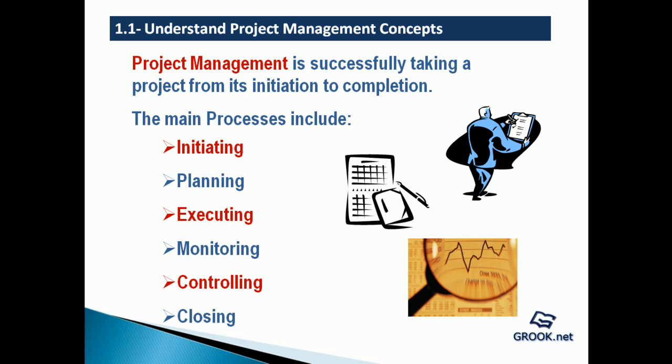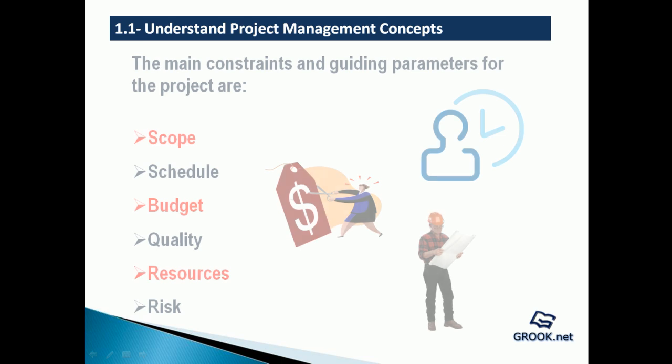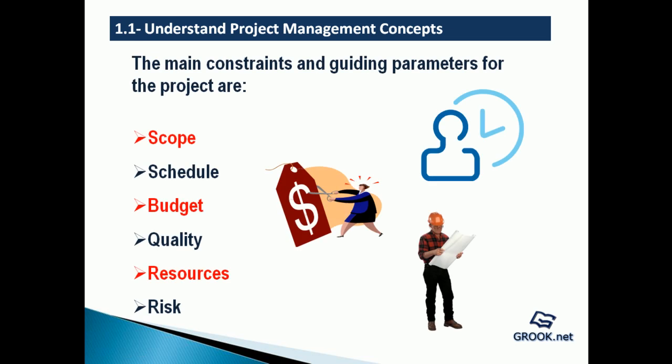We briefly take a look at the main constraints and guiding parameters for the project. These are scope, which defines what is included and what is not included in the project; schedule, which is the time frame for the project; the budget; the quality; resources, which could be in terms of manpower, machinery, or materials; and risk, which is associated with the unique nature of that particular project.